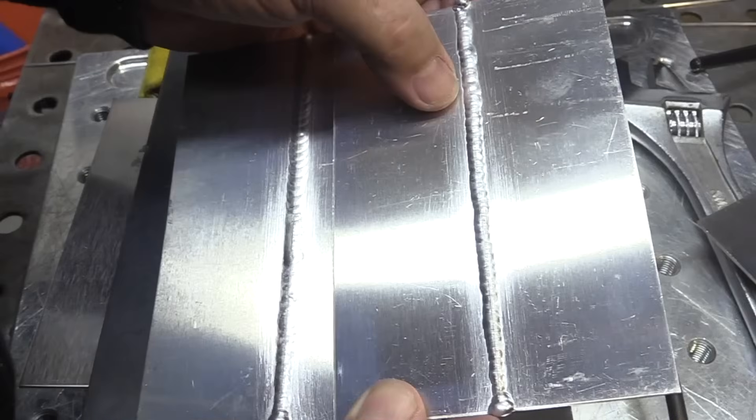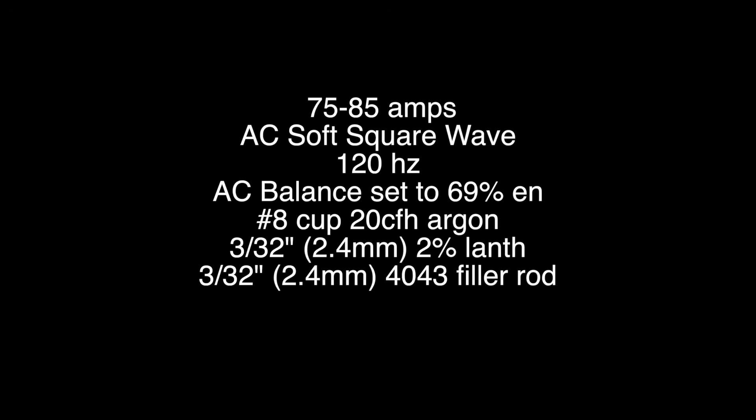But you got to get used to it. And you kind of got to recognize that, well, that's going to need more amperage than I think it would outside the fixture. In this case, 75 to 85 amps is what it took to penetrate 063 material. 60 amps would have done that easily outside the fixture.